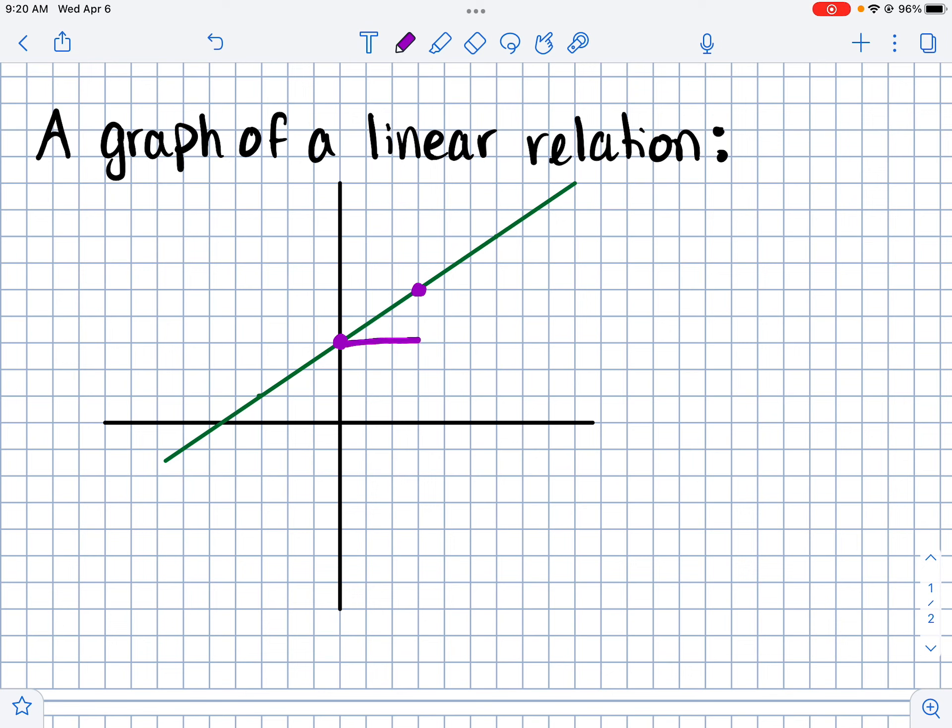And we saw that you could just calculate the slope or the rate of change by looking at the rise, which is also the change in y values. So that would be like 2 over the run. 1, 2, 3, which would be 3. So the rate of change of this would be 2 over 3.